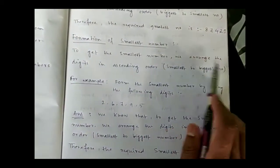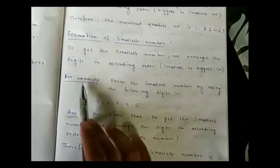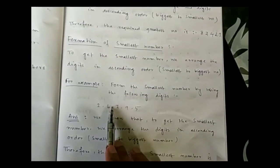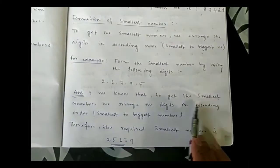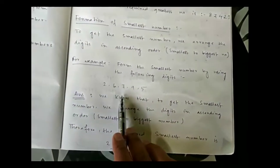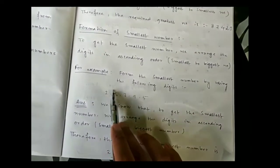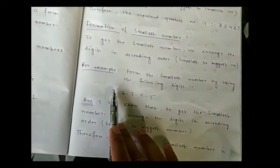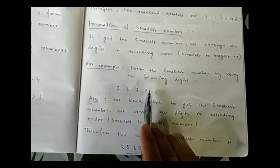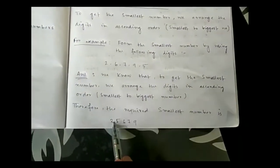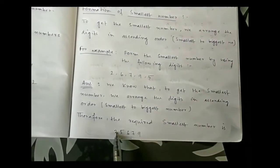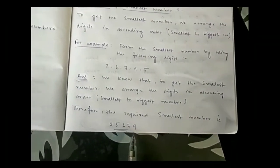Formation of smallest number: to get the smallest number, we arrange the digits in ascending order, that is smallest to biggest. For example, using given digits, the smallest digit is 2, so we write 2 first, then 5, then 6, then 7, then 9. By arranging from smallest to biggest, we get our required smallest number.